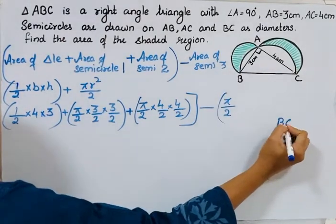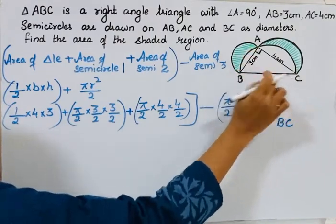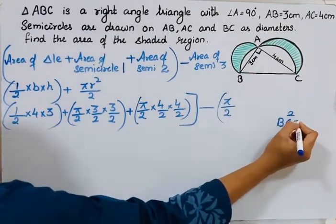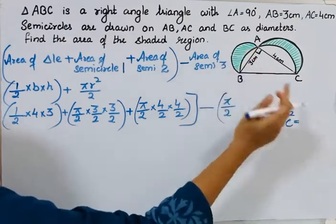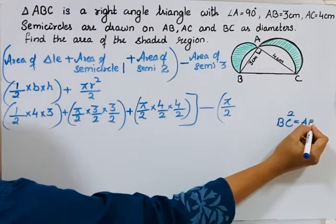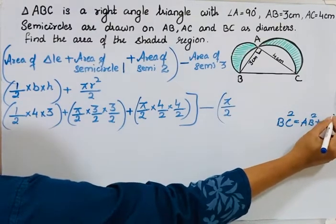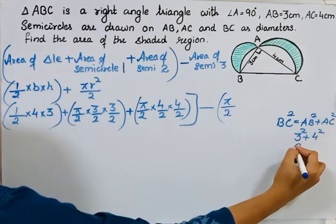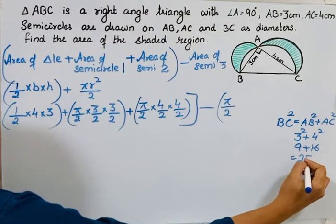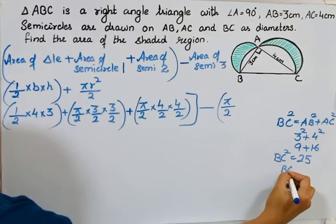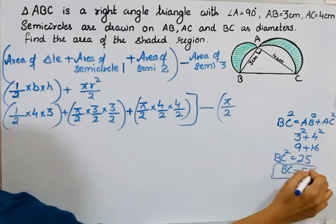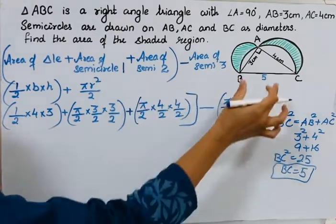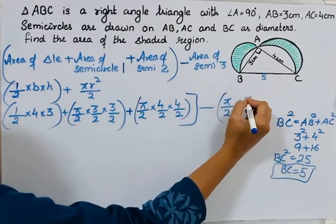By Pythagoras theorem, BC is the hypotenuse. In this right-angle triangle ABC, the right angle is at A, so BC is the hypotenuse. The square of the hypotenuse equals the sum of the squares of its legs, which are AB and AC. AB is 3, so AB² is 9; AC is 4, so AC² is 16. So BC² = 9 + 16 = 25, which means BC = 5 centimetres. So the diameter of semicircle 3 is 5, and the radius is 5/2.